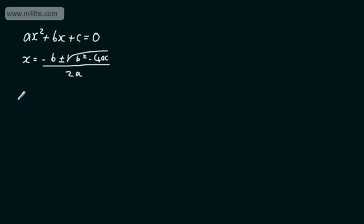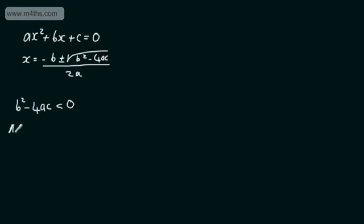The first scenario is when b squared minus 4ac is less than 0. When you've been solving quadratic equations in the past, sometimes you've come up with a math error when putting this into your calculator. The reason is that this value is a negative number, and we can't take the square root of a negative number and get a real value. So b squared minus 4ac less than 0 means no real roots.